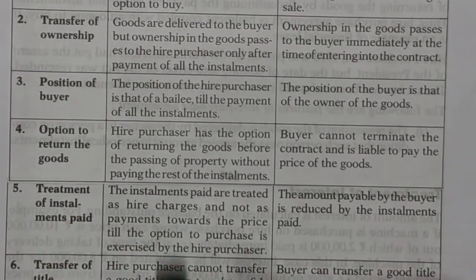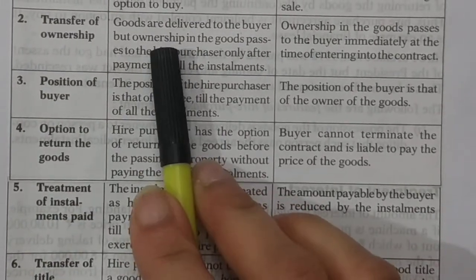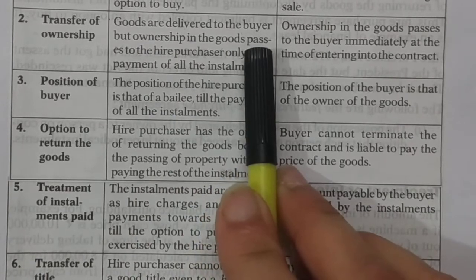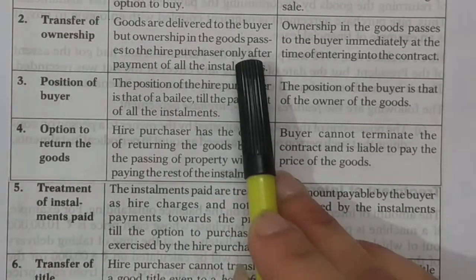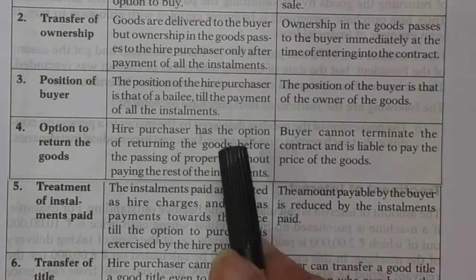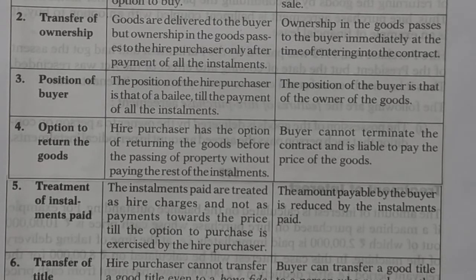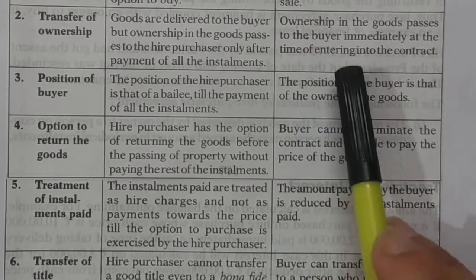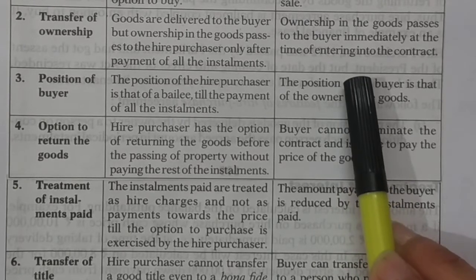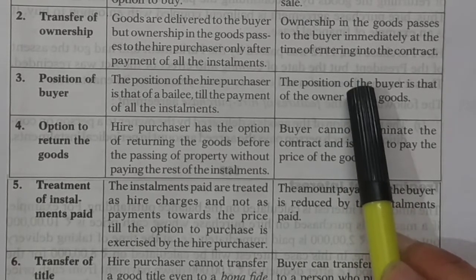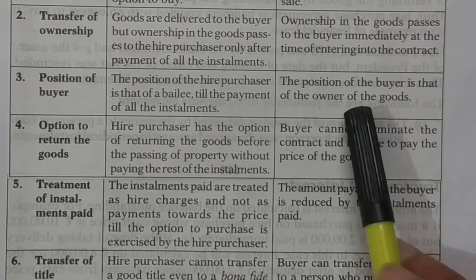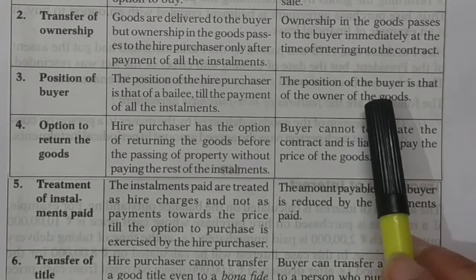The next point of difference is transfer of ownership. In the hire purchase system, delivery of goods is given immediately upon signing, but the ownership and property rights remain with the seller until the last installment is paid. In the installment purchase system, ownership transfers immediately upon signing the contract — just like with online shopping websites.